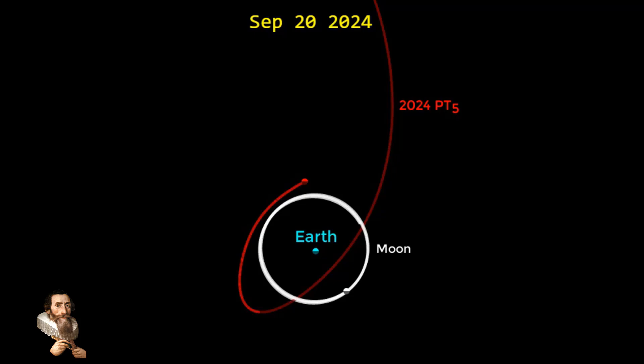The temporary capture of asteroid 2024 PT5 as a mini-moon is a captivating event that highlights the intricate gravitational interactions that take place within our solar system. But what do you guys think about this? Comments below and thank you for watching. See you in the next side.